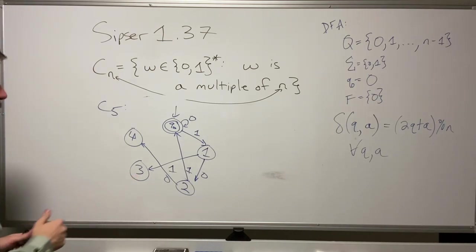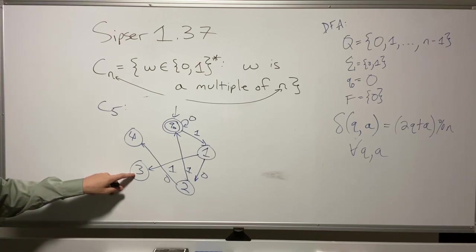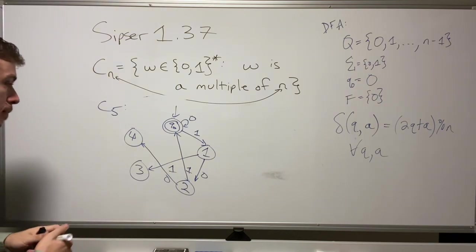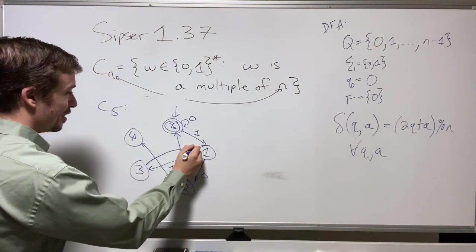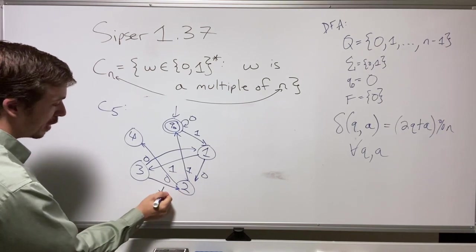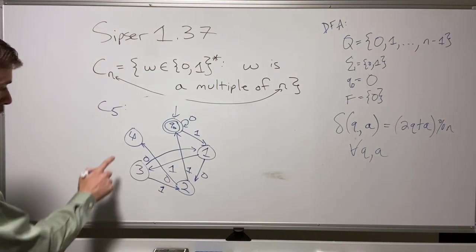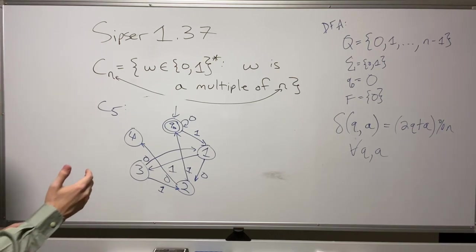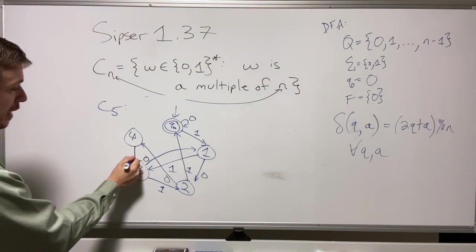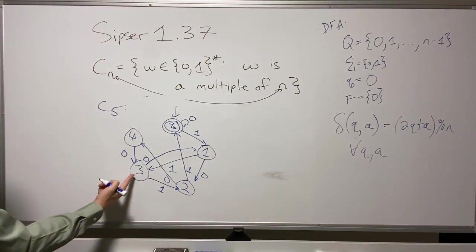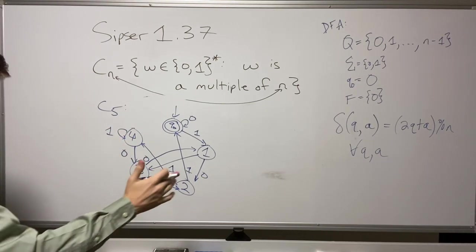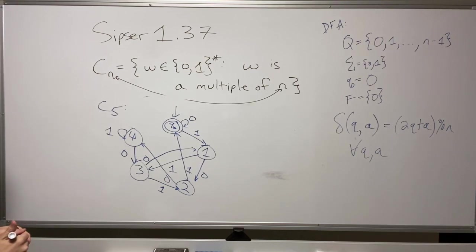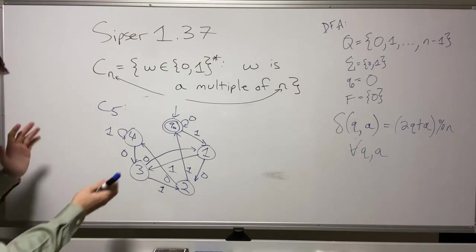For state 3 on input 0: 3 times 2 = 6 mod 5 = 1, so it goes to state 1. The 1-transition goes to state 2. For state 4 on input 0: 4 times 2 = 8 mod 5 = 3, so it goes to state 3. The 1-transition goes to state 4. This is exactly why earlier when we had x=9 and then 19, they both had a remainder of 4.